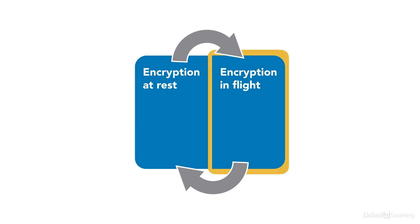So what we do is encryption in flight — information is encrypted before it's sent down the wire to the consumer, and as it's sent back to the database or data store on the cloud, it's encrypted as well. People using network sniffers or other tools to monitor the network and grab data won't be able to, because ultimately the data is going to be encrypted whether it's on the wire or at rest in the database or data store.